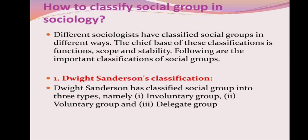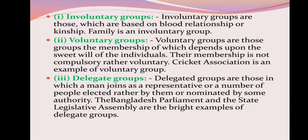First, David Sanderson's classification. He classified social groups as involuntary group, voluntary group, and delegate group. Involuntary groups are those which are based on birth relation or kinship — family is an involuntary group. Voluntary group means the membership of which depends upon the will of the individuals; membership is not compulsory but voluntary — a cricket association is an example. Delegate groups are those which a man joins as a representative elected by people or nominated by some authority; the Bangladesh Parliament and state legislative assembly are examples.